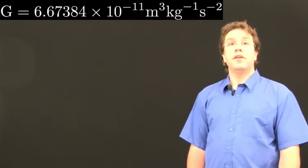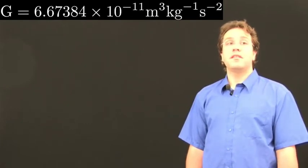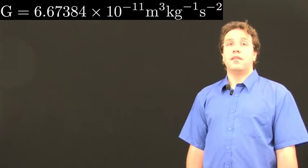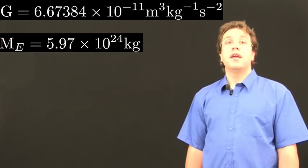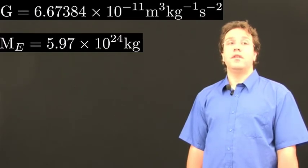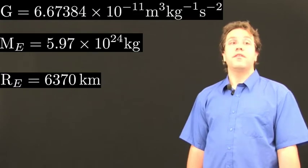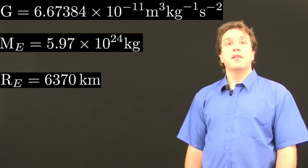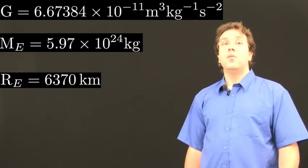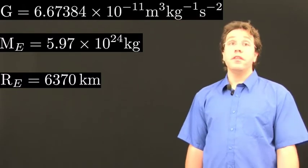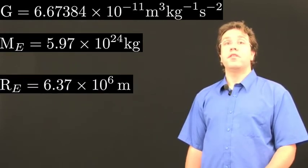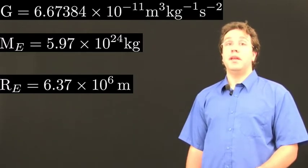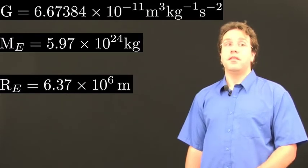The universal gravitational constant G is equal to 6.67384 times 10 to the minus 11 metres cubed kilograms to the minus 1 seconds to the minus 2. The mass of the Earth, to three significant figures, is 5.97 times 10 to the 24 kilograms. The radius of the Earth, again to three significant figures, is 6,370 kilometres — or 6.37 times 10 to the 6 metres. Taking these together, we can put the numbers in and work out the acceleration due to gravity on the Earth.